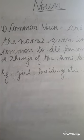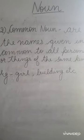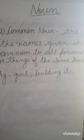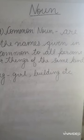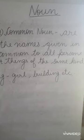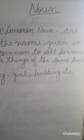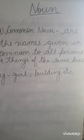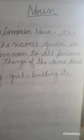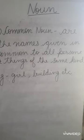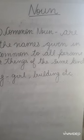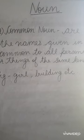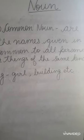The second type of noun is common noun. Common nouns are the names given in common to all persons or things of the same kind. The names are given commonly to the same kinds of things or persons. For example: girl, building, etc.